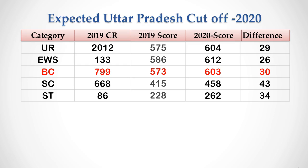For EWS the increase is 26 marks and for BC it is 30 marks. If your category rank is less than 800, then you have a good chance to get a government medical college in Uttar Pradesh under state quota counselling. For SC category the cutoff is expected to increase by 43 marks, and for ST category it is expected to increase by 34 marks.